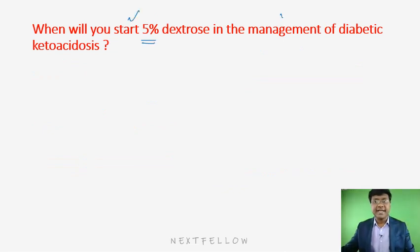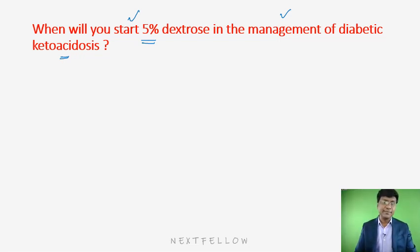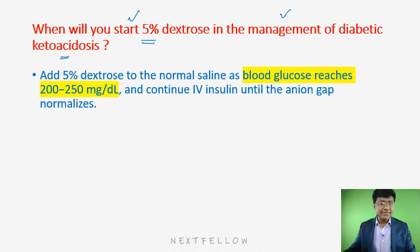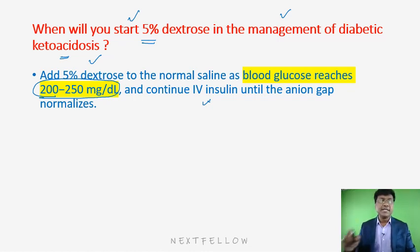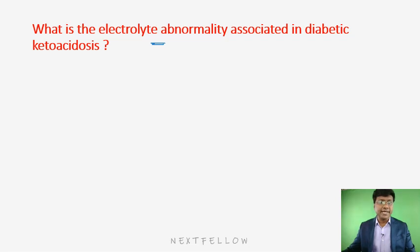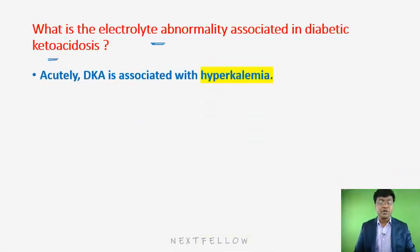Regarding five percent dextrose in DKA management: when giving insulin infusion there is a chance of hypoglycemia. When blood glucose level reaches 200 to 250 mg/dL, IV insulin should be given along with five percent dextrose. Blood glucose may initially be 300, 400, or 500, but as insulin infusion is given it normalizes; at 200–250 mg/dL, add five percent dextrose.